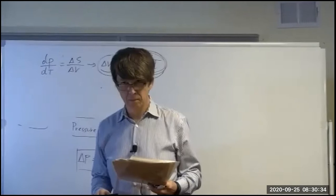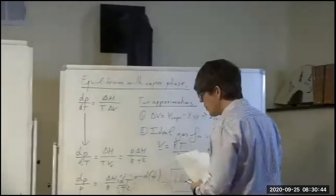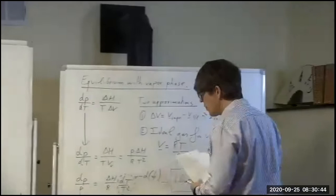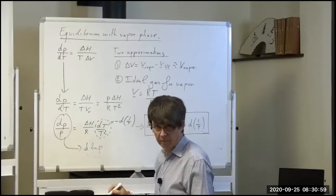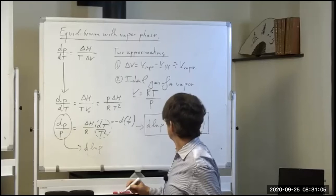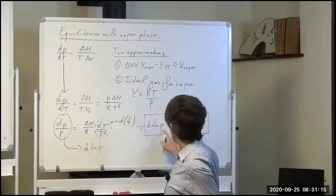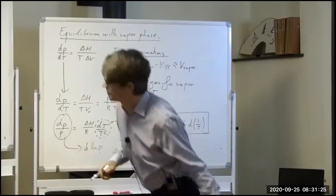A student asks why the notation uses d(ln P) rather than an already-integrated form. The answer is that dp/p is the differential of the logarithm of p — not yet integrated. If integrated, this will become ln P = something × (1/T) + constant.